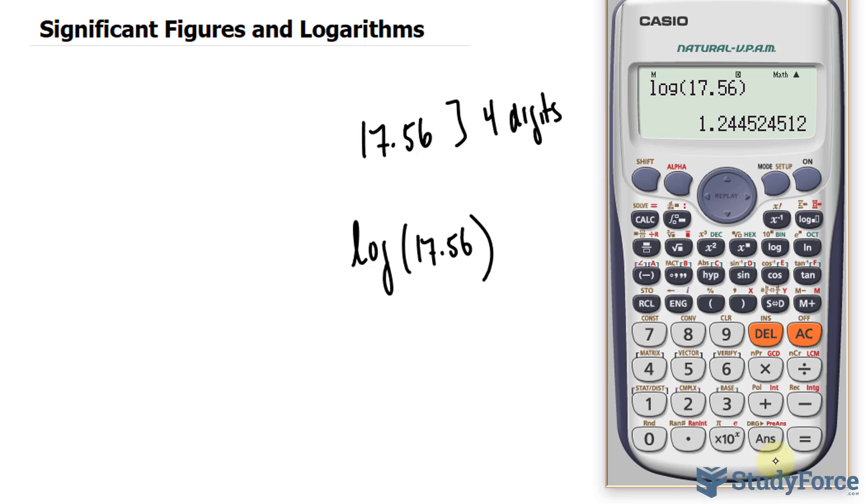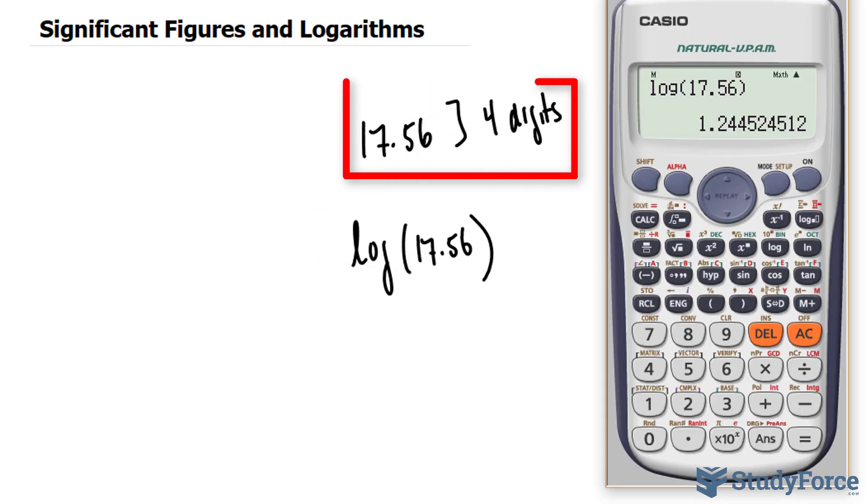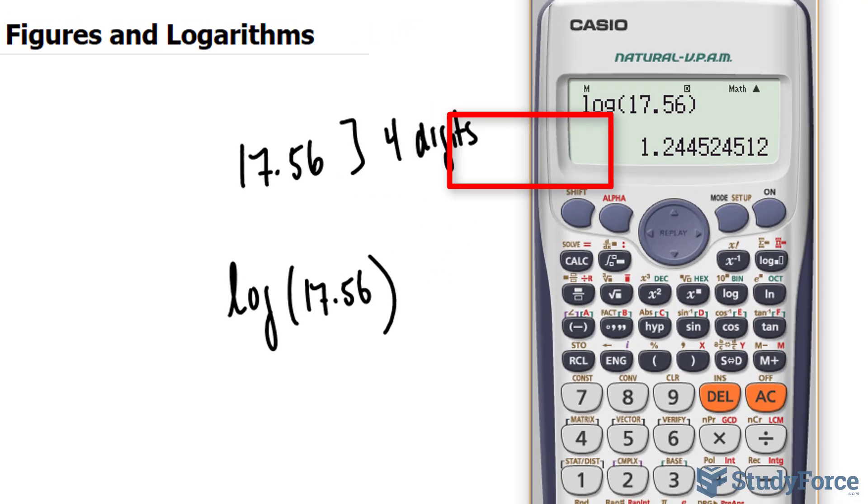Now how do we know when to stop? The number of digits that you log dictates the amount of digits after the decimal place. So since this had four digits, we should also have four digits after the decimal place.